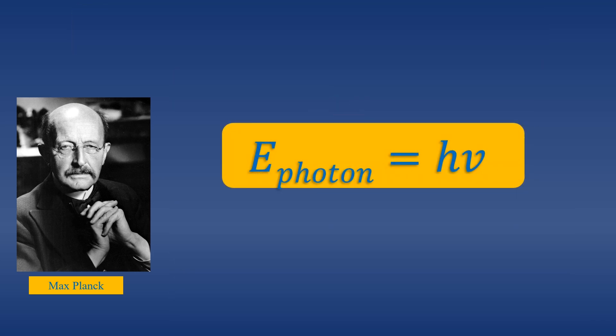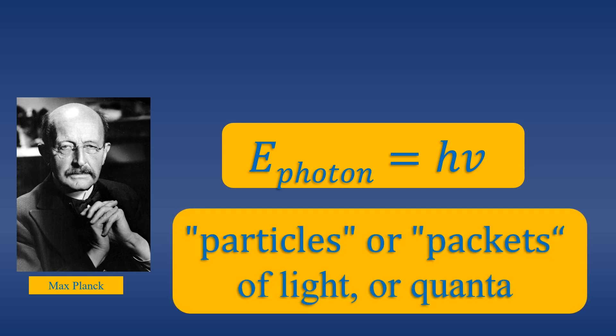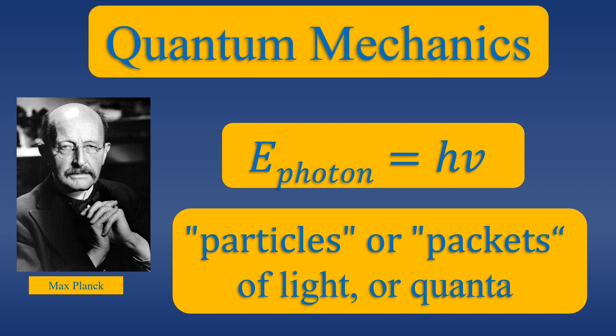In modern physics, the quantization of energy is written like this. Because only discrete values are allowed, we can think of them as particles, or packets of light, called photons, or quanta. Thus, a new physics is born: modern physics, quantum mechanics.